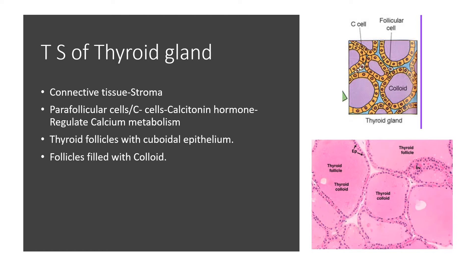Just outside the follicle some more cells are present. These cells are called follicle cells. You can also find the parafollicular cells — they are white in structure and present just outside the follicle cells. The parafollicular cells are also termed as C-cells. They are just outside the follicle cells and are responsible for secreting the hormone calcitonin.